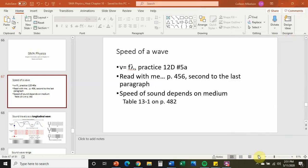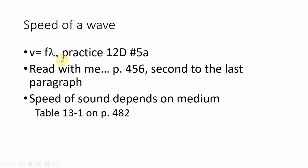Do the units make sense when we multiply frequency and wavelength to get meters per second? Frequency is 1 over the period. The period is a certain amount of time in seconds, so frequency is 1 over seconds, or hertz. Wavelength is always in meters. If we multiply those together, we get meters divided by seconds — meters per second.